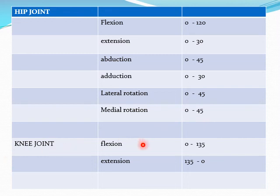For the knee joint, movements are flexion and extension. Flexion: 0 to 135 degrees. Extension: 135 to 0 degrees.